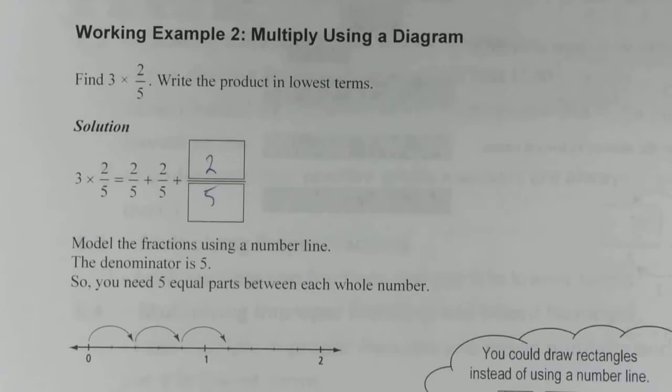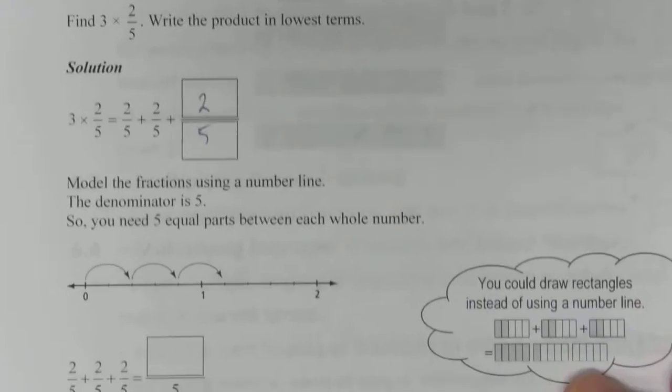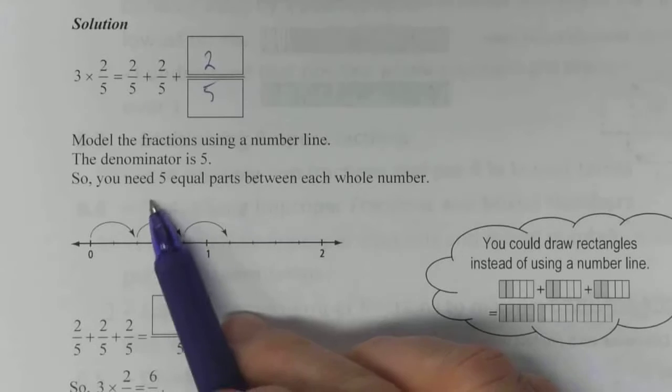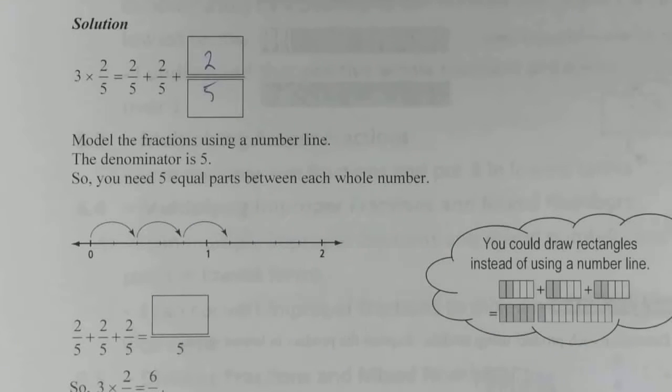Model the fractions using a number line. That's going to be our diagram. So in this case, our denominator is five, that's the bottom number. So you need five equal parts between each whole number.